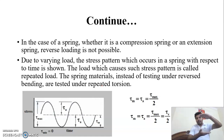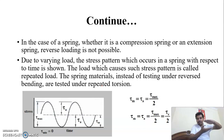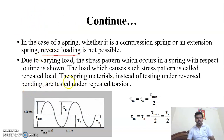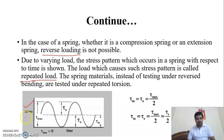Reverse load is not possible for springs. If we have two plates with a spring and a compressive load, there can be variation in compression, but it is not possible to have compression followed by expansion — that is not possible. If we have compression, then variation remains in compression; if we have tensile, then variation remains in tension. This is a repeated load graph of stress versus time.